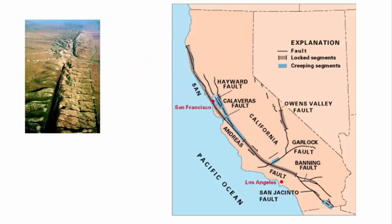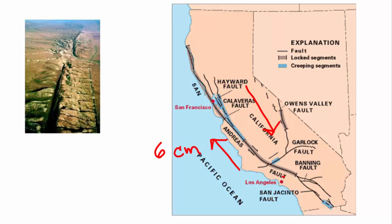The most famous transform boundary is happening in California. In California, you have this part of the state which is moving north, and this part of the state which is moving south, so that makes it a transform boundary. There are some people that will joke around and say that California is going to slide off and fall into the ocean, and that's not exactly accurate. But what is happening is that this part of California is moving north at 6 centimeters per year, so Los Angeles and San Francisco in 10 million years are going to be side by side.